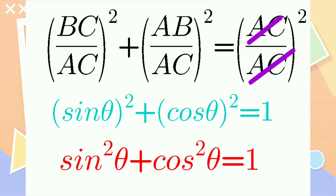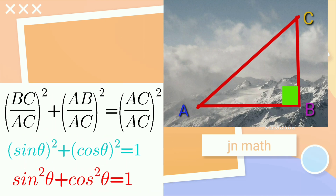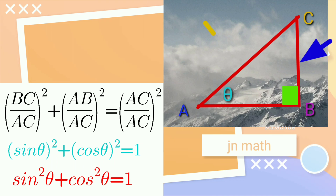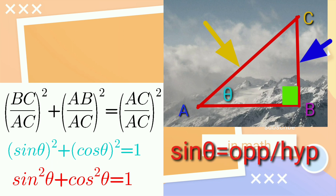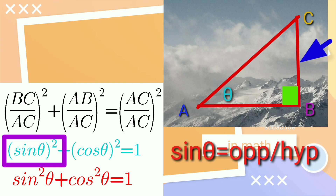Now, look at BC by AC. What is BC by AC? Look at the picture — BC is the opposite side of the base angle theta, and AC is the hypotenuse. So, opposite by hypotenuse is what we call sin theta. So, sin theta whole squared plus...